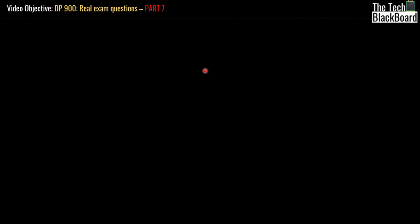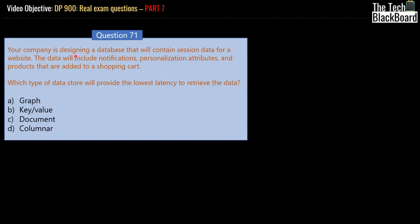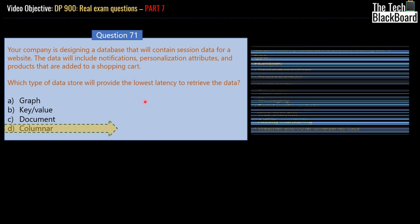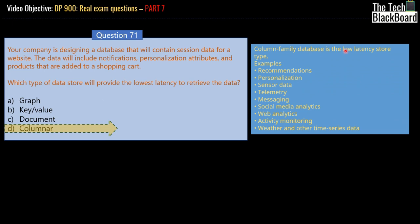Let's begin part 7 with question number 71. The question says your company is designing a database that will contain session data for a website. The data will include notification, personalization, attributes, and products added to a shopping cart. Which type of data store will provide low latency to retrieve the data? Keep in mind the keywords: notification, personalization, attributes, and products added to a shopping cart. The answer is columnar database or columnar data, which is a low latency data store type.